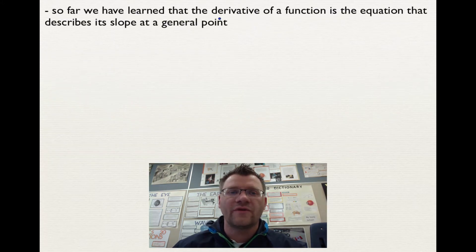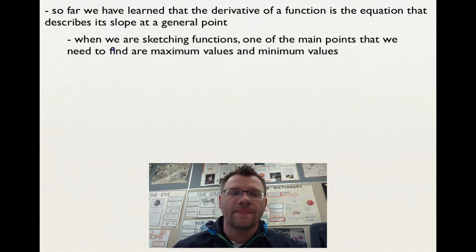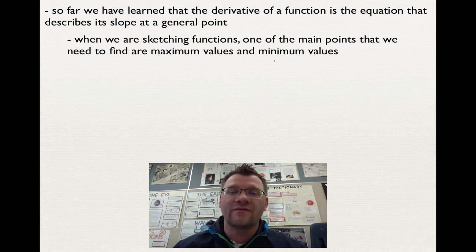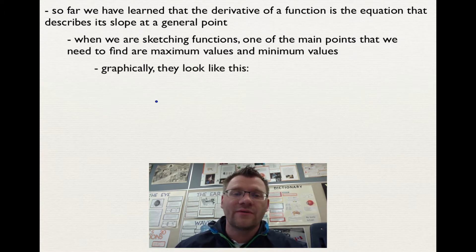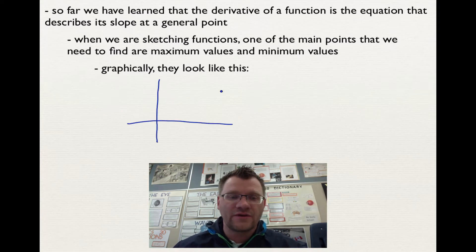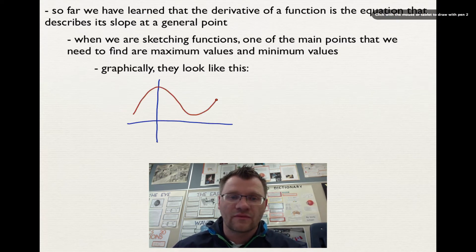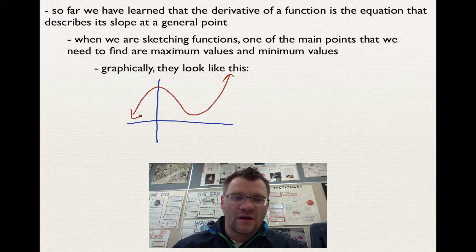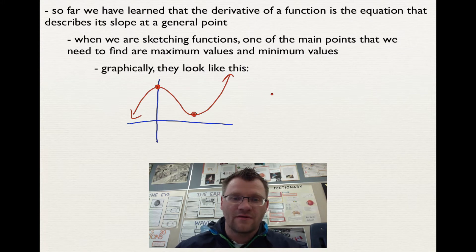So far we've learned that the derivative of a function is the equation that describes its slope at a general point. When we're sketching functions, one of the main points we need to find are the maximum values and the minimum values. Graphically, if I had a graph of a function that looks something like this, I can see there is a maximum value right here, and there happens to be a minimum value right there.